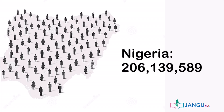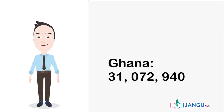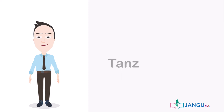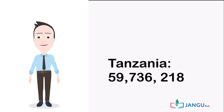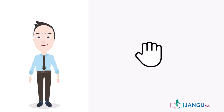Great job! Ghana's population is thirty-one million, seventy-two thousand, nine hundred and forty people. Finally, Tanzania's population is fifty-nine million, seven hundred and thirty-six thousand, two hundred and eighteen people. Great job for paying attention and participating in the lesson so far.